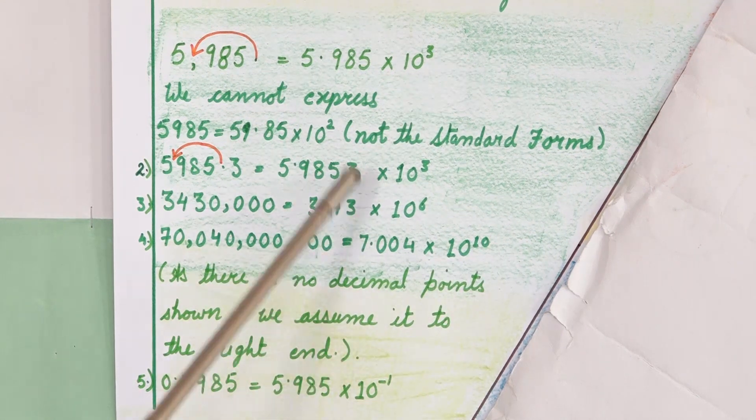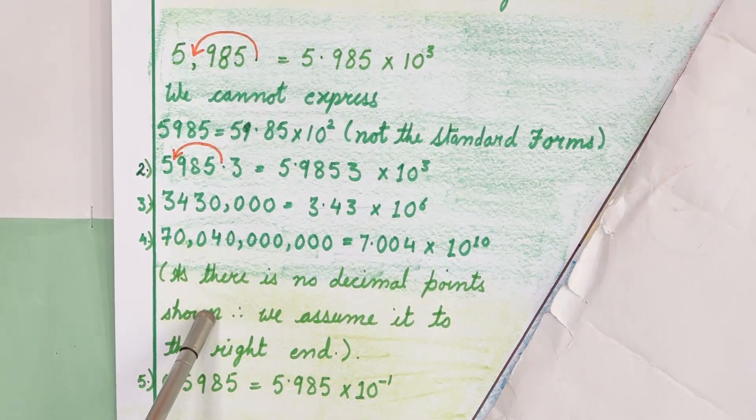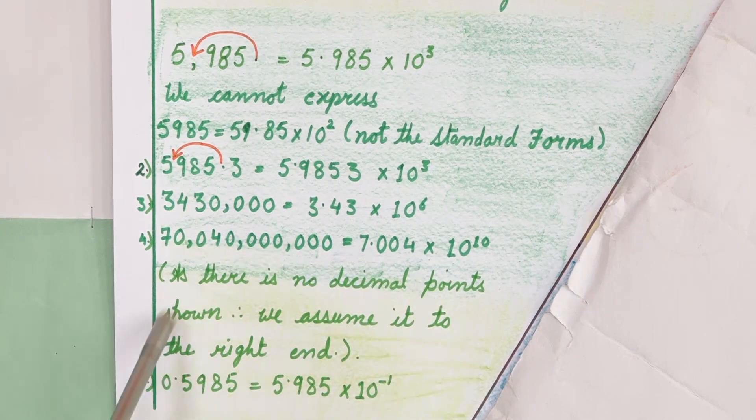So it will become 7.004 multiplied by 10 raised to the power 10. The most important thing that you should know in this is that if there is no decimal point shown, we assume it to the right end.